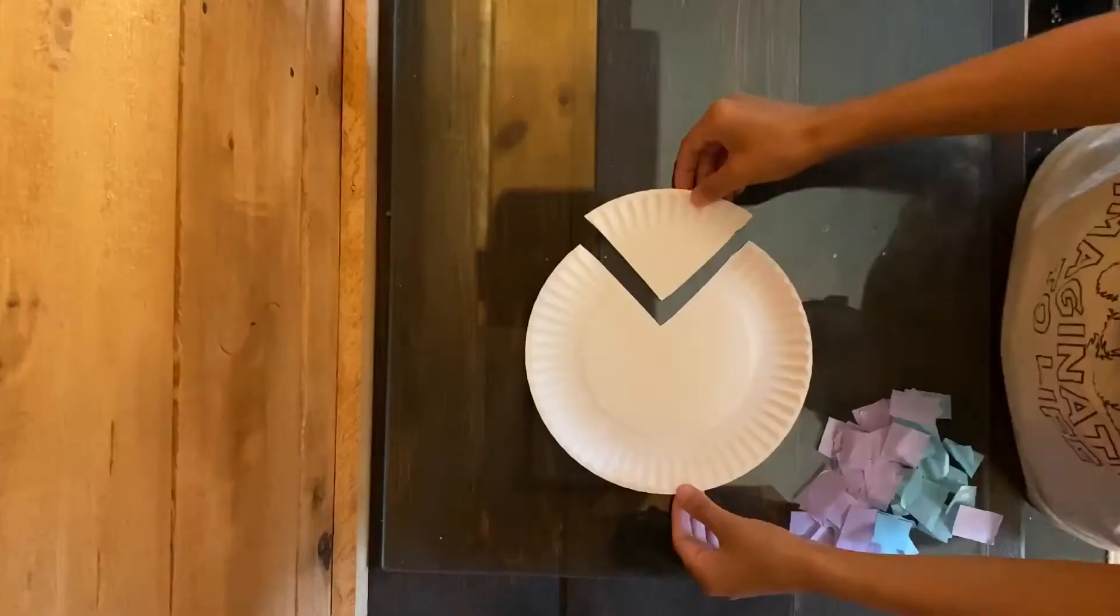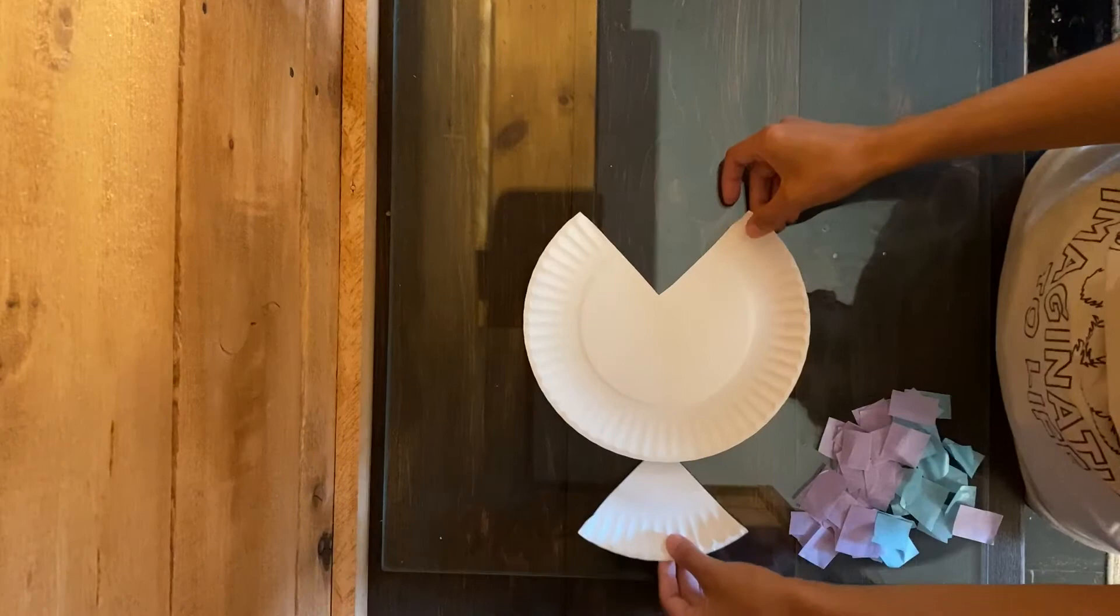Now that we've cut our triangle out of our plate, we're going to use it as the tail. But before we glue anything on, we're going to add our scales.